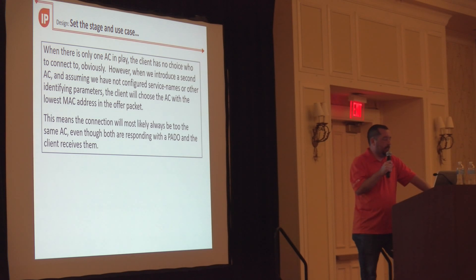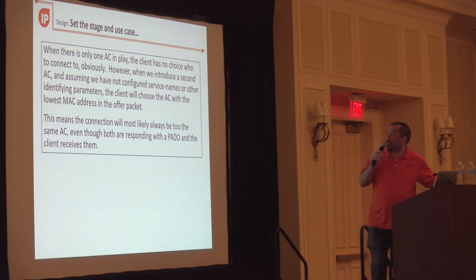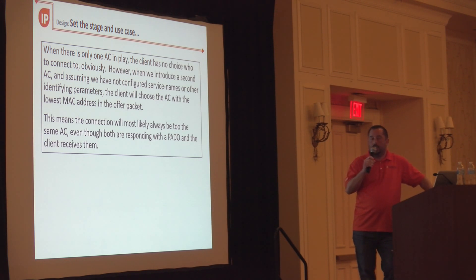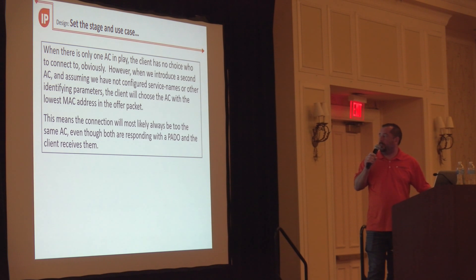When there's only one AC in play, the client has no choice who to connect to. However, when we introduce a second AC, and assuming you have not configured service names or identifying parameters, the client will choose the AC with the lowest MAC address in the offer packet. This means the connection will most likely always go to the same access concentrator, even though both are responding with a PADO.